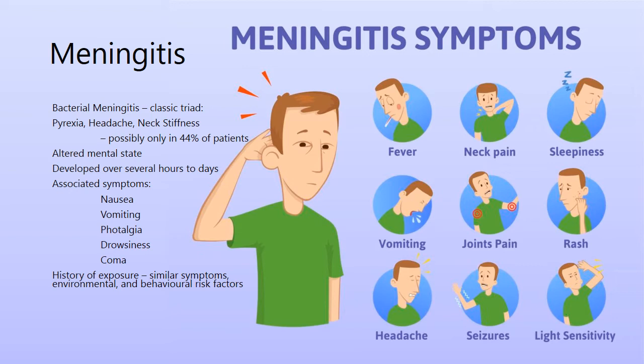With regard to history taking, as well as exploring the presenting complaint to make a diagnosis of meningitis, it can be useful to explore whether or not they have a history of exposure — for example, if they've been exposed to others who had similar symptoms and a diagnosis of meningitis, or whether they've been exposed to any environmental or occupational risk factors. People who work with animals such as rodents or farm animals are at increased risk of certain bacteria that can lead to meningitis, as is ingesting unpasteurized dairy products.